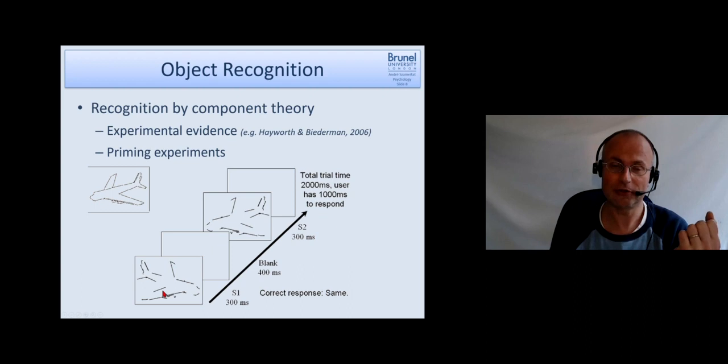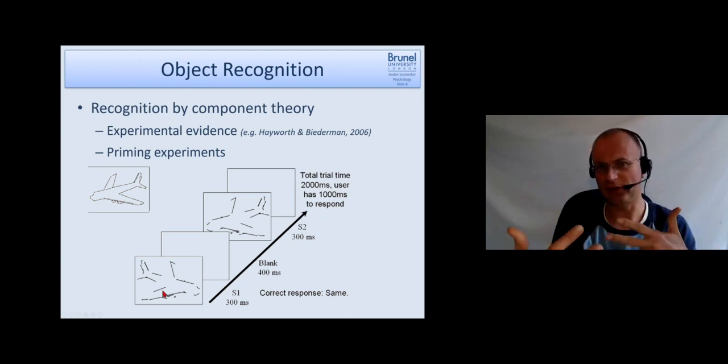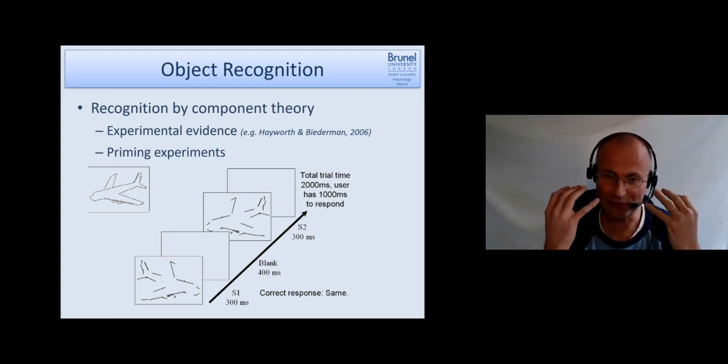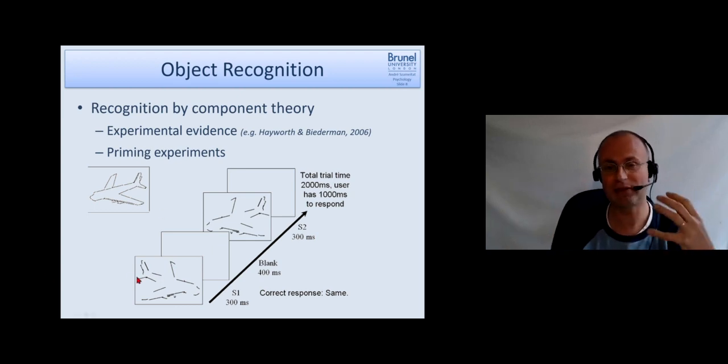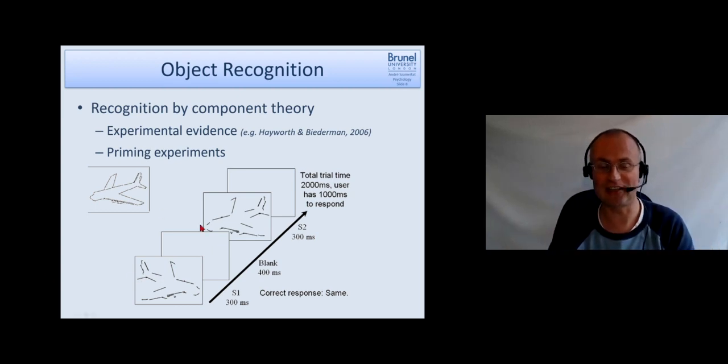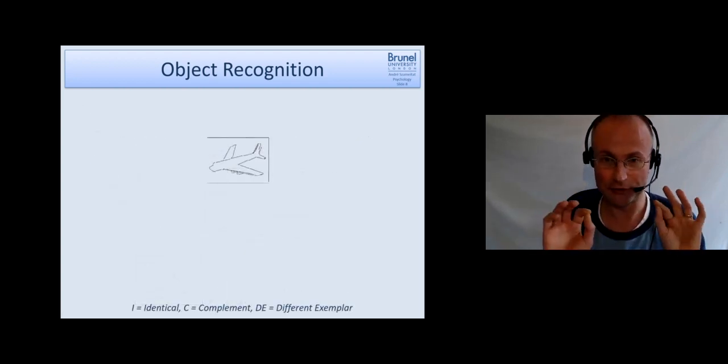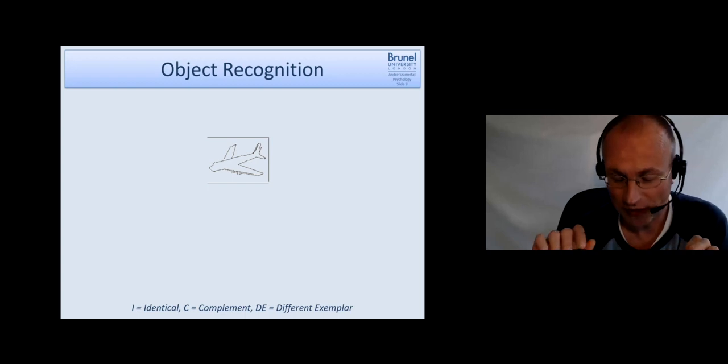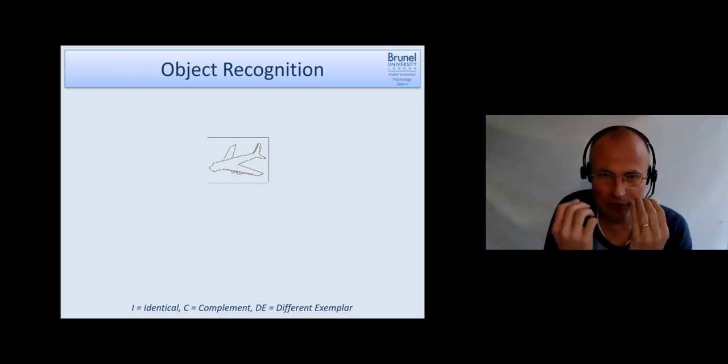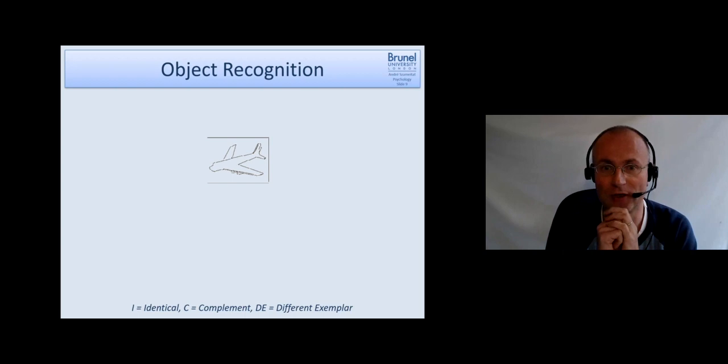And what they had to decide was is that the same like this one or is it a different exemplar? So is it basically the same plane or a different type of plane? Because it's mirror reversed you can't do a very simple straightforward perceptual matching. You need a representation of that plane to be able to do that task. And then they have to just say yes or no, same or different. And then the next trial comes up and then they see a different combination. Next trial comes up a different plane, different combination and so forth. And this goes on for quite a while.